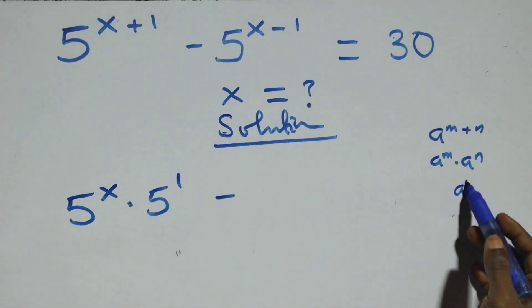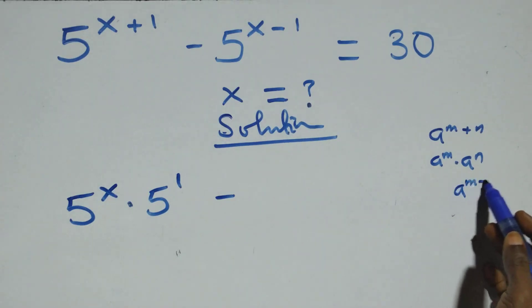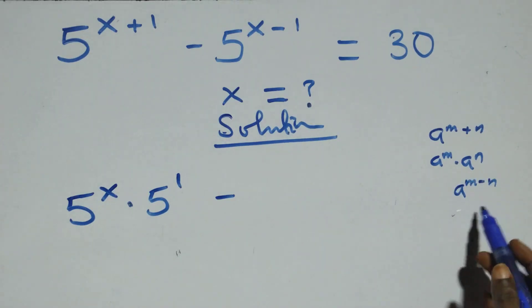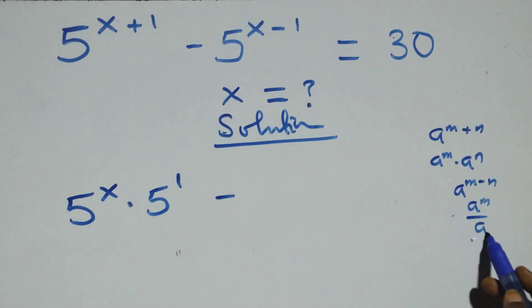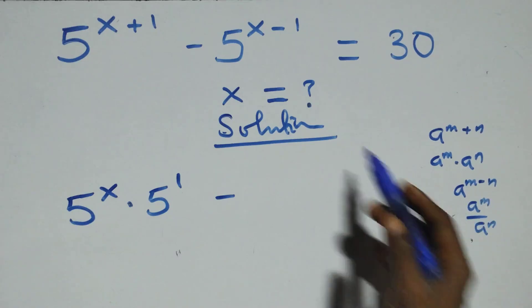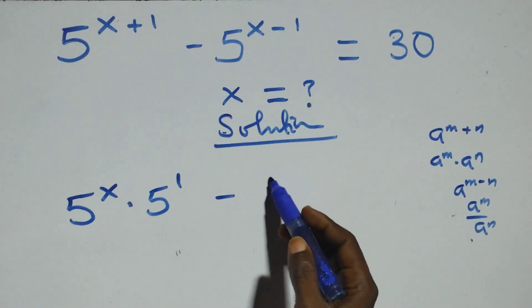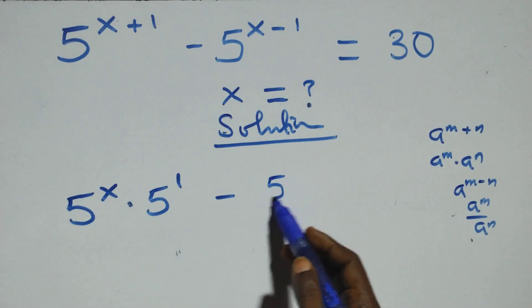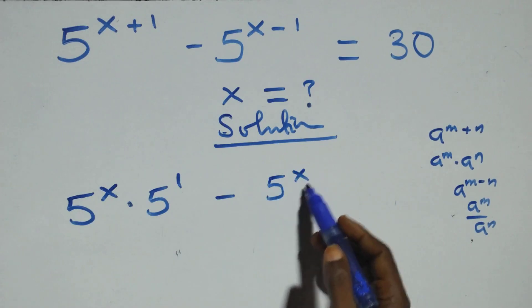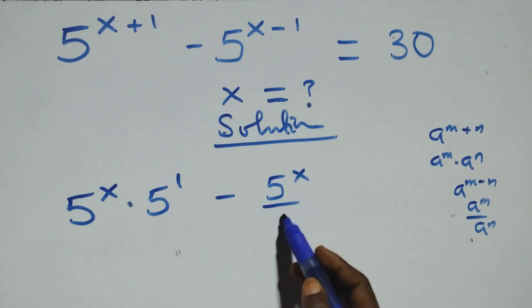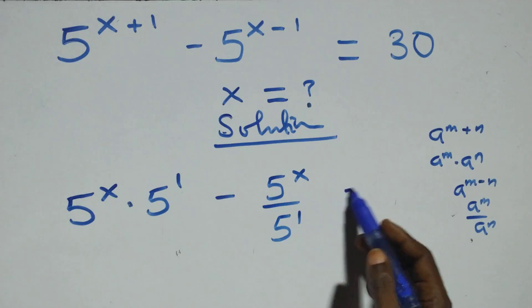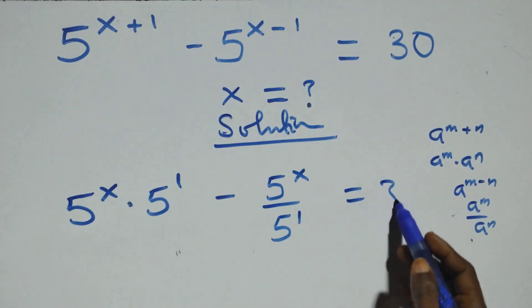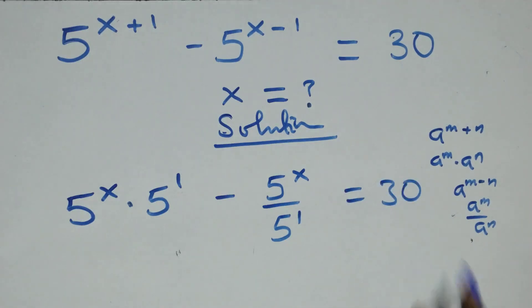And minus — here also we have: when we have a raised to power n minus m, this is the same thing as a raised to power n over a raised to power m. So here we have 5 raised to power x over 5 raised to power 1.